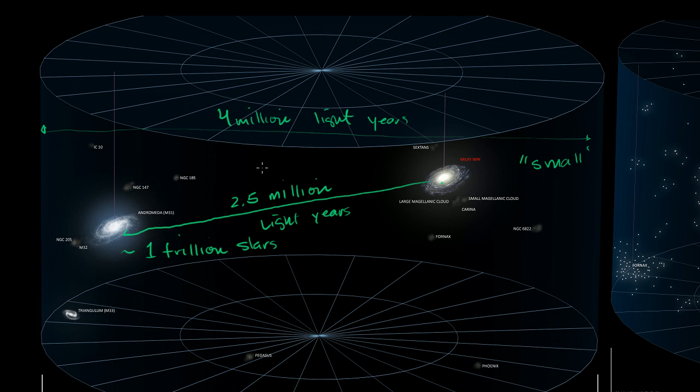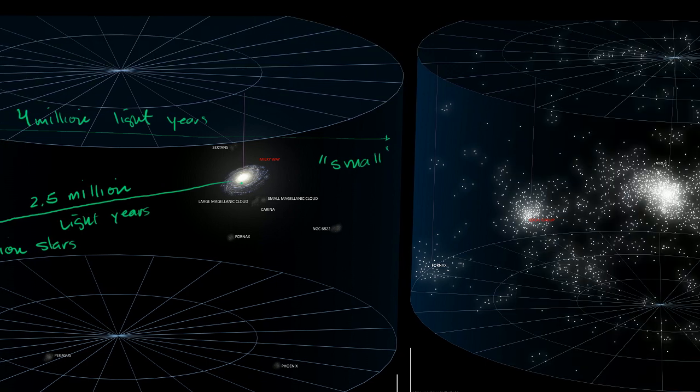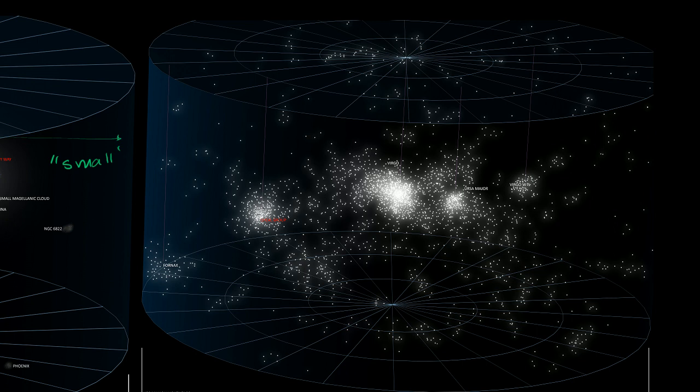But even this is, I'm starting to stumble on my words because there's really no words to describe it, but even this is small on an intergalactic scale. When you zoom out more, you can see our local group is right over here. And this right over here is the Virgo supercluster. Each dot here is at least one galaxy, but it might be more than one galaxy.